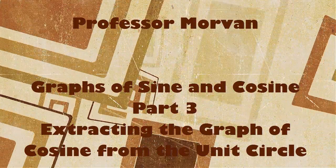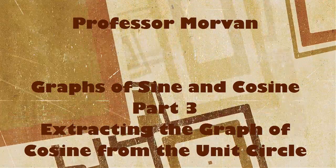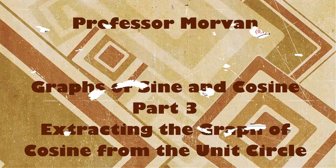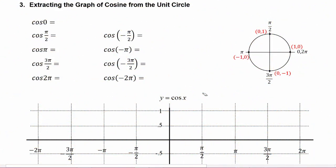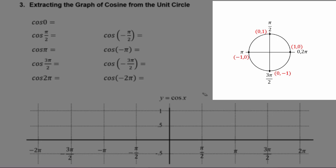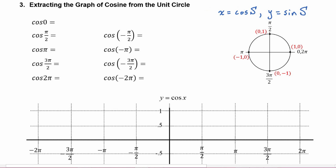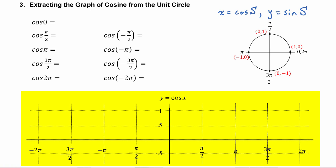In part three of our lesson on graphs of sine and cosine, we will be extracting the graph of cosine from the unit circle. Remember that on the unit circle we have three variables: s is going around the outside of the circle, x is the cosine of s, and y is the sine of s. We're going to get the values off the unit circle and use them to turn it into a graph that has two variables in the xy plane.